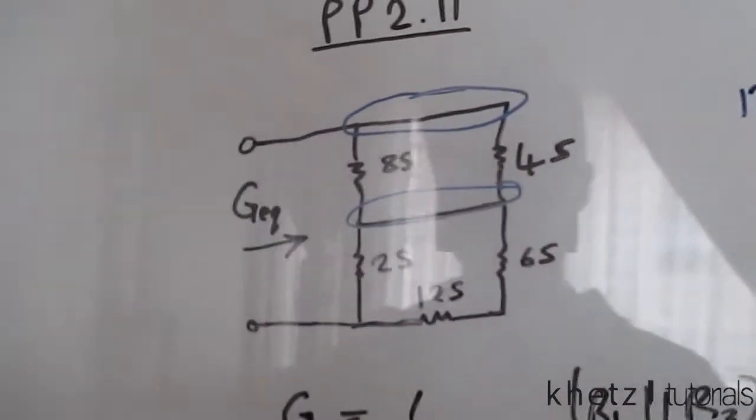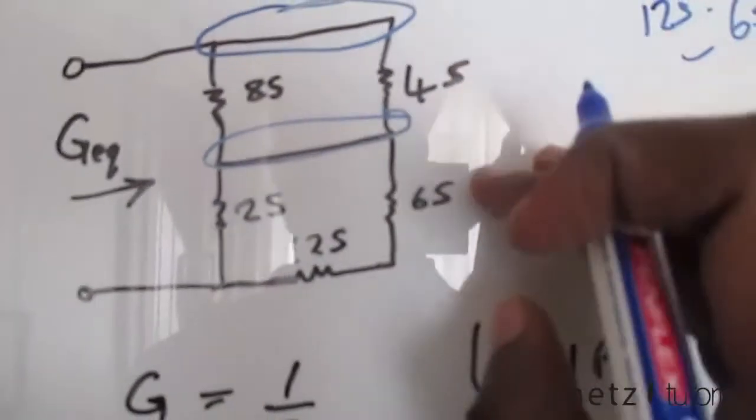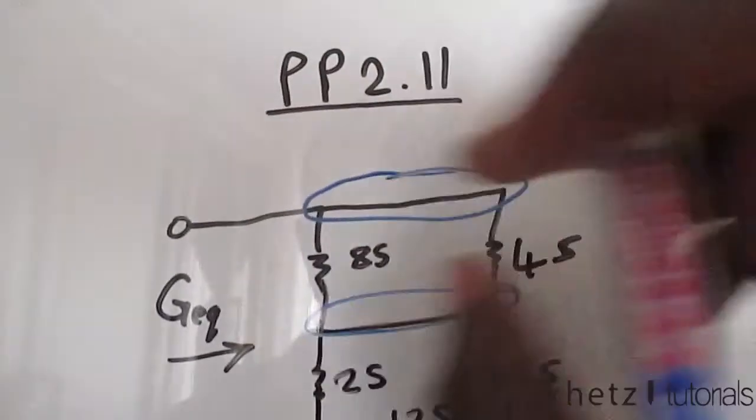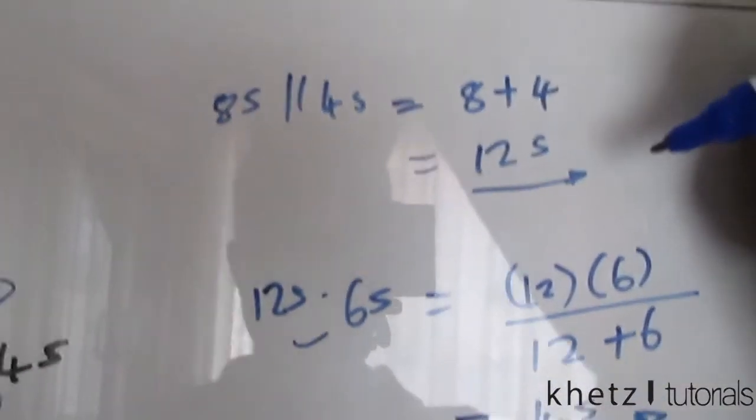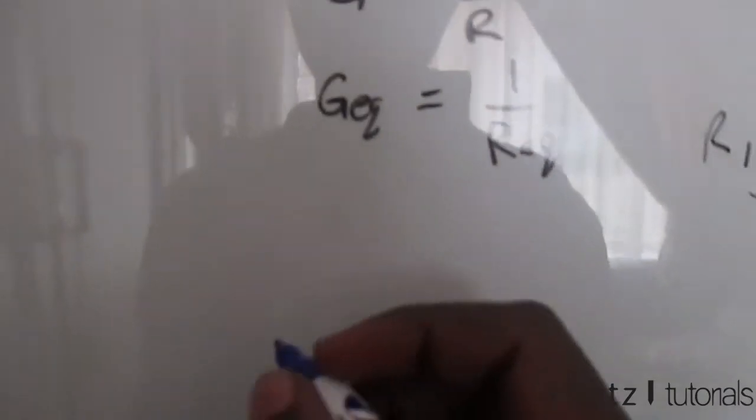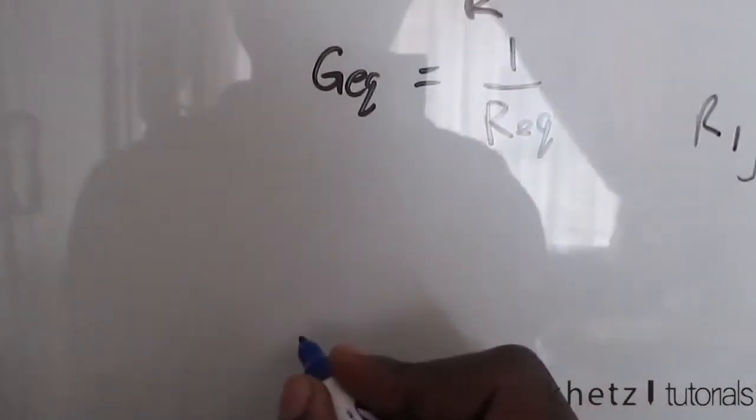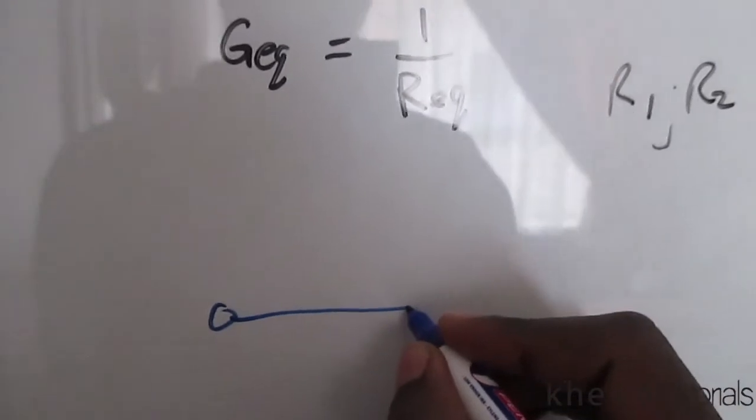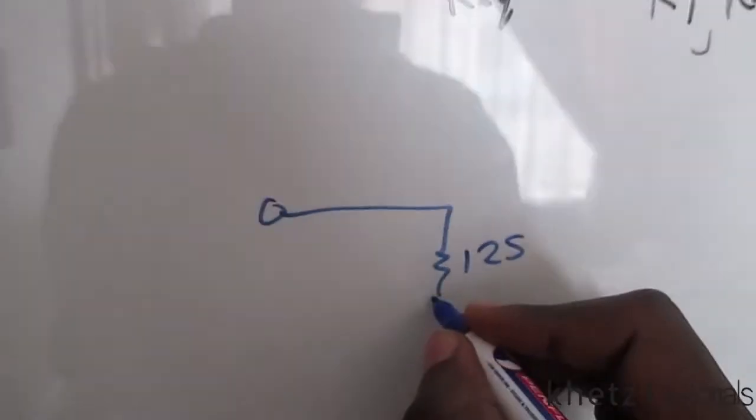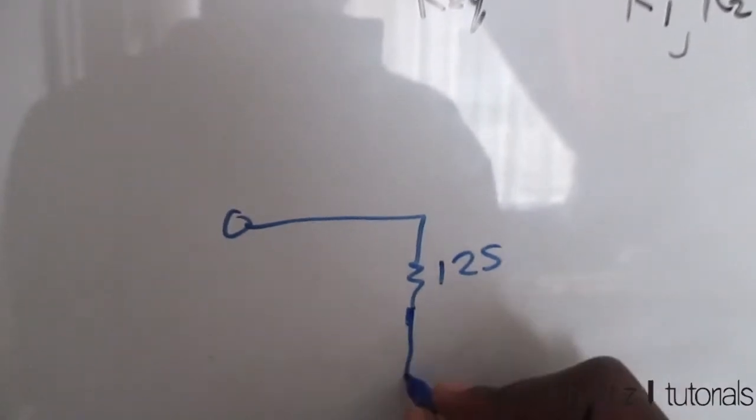Then we have, so we've collapsed this part into four Siemens. We've collapsed these two into 12 Siemens. We can now draw the new circuit. Drawing the new circuit from our calculations, we have the terminals. We have the 12 Siemens, which we calculated. And down here,